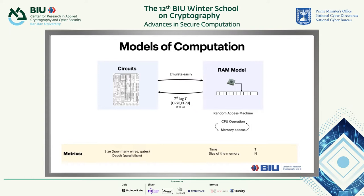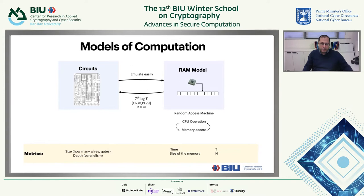We can translate a RAM program into circuits and circuits into a RAM program. The metrics are quite different between those two models. In circuits, we care about the size — how many gates and wires — and also the depth, which reflects parallelism. In the RAM model, we care about time — how many steps — and the size of the memory, which we'll denote as capital N throughout these talks.